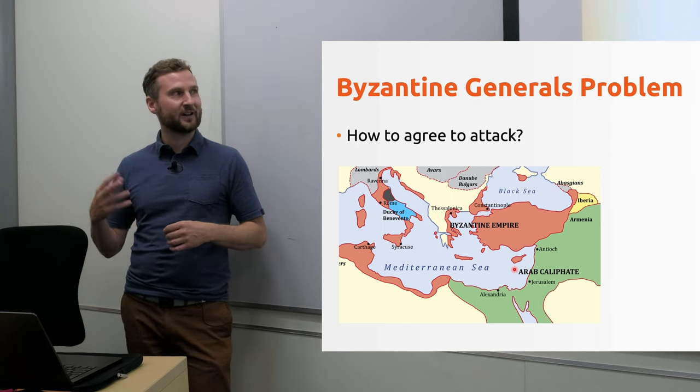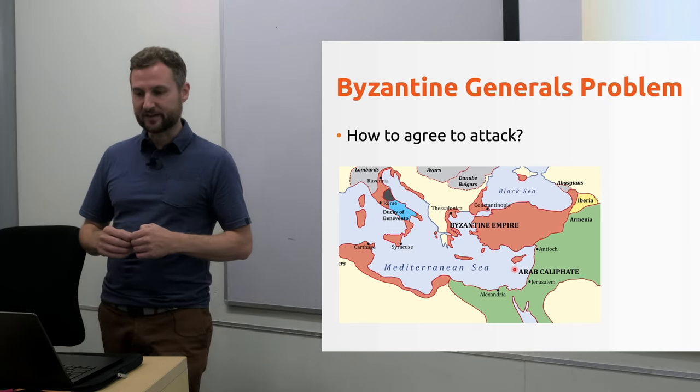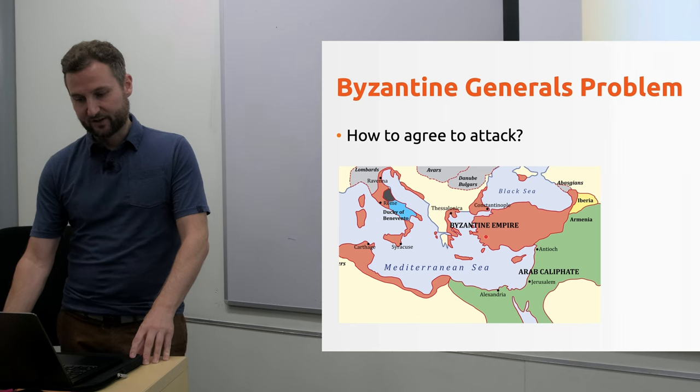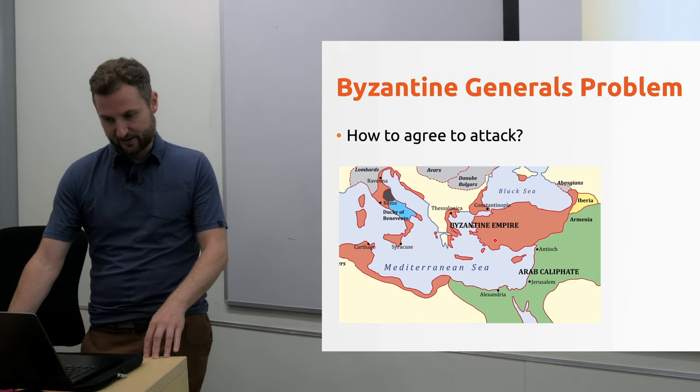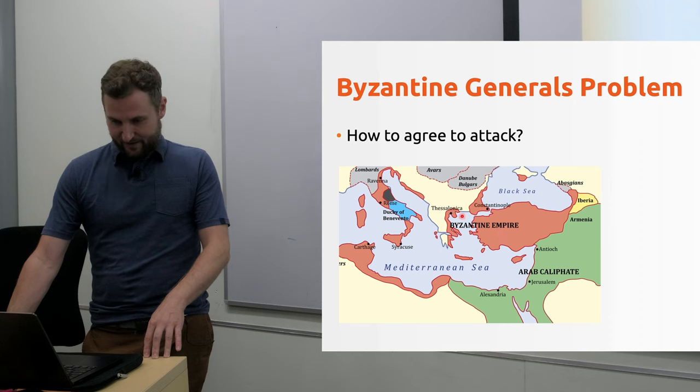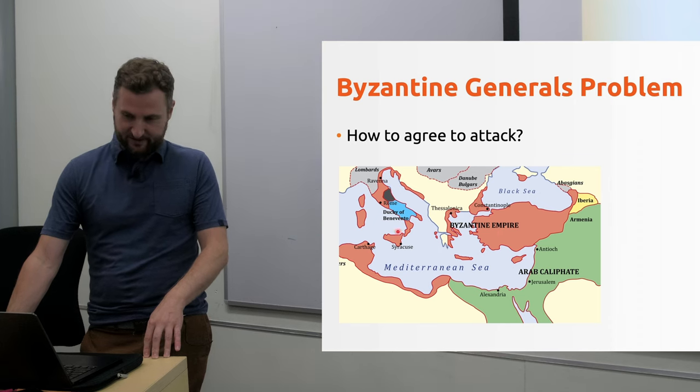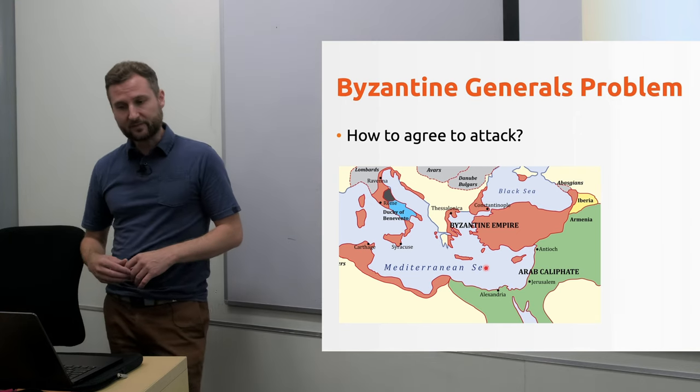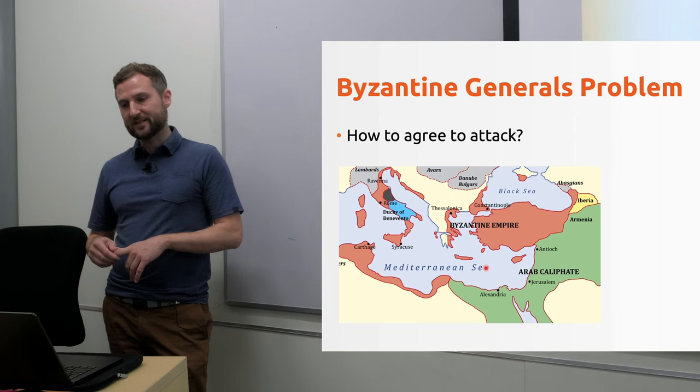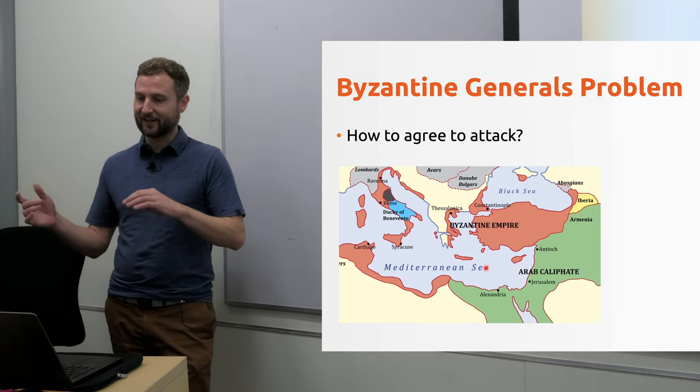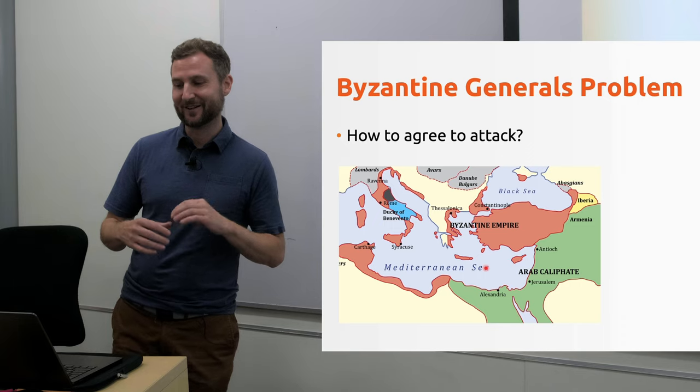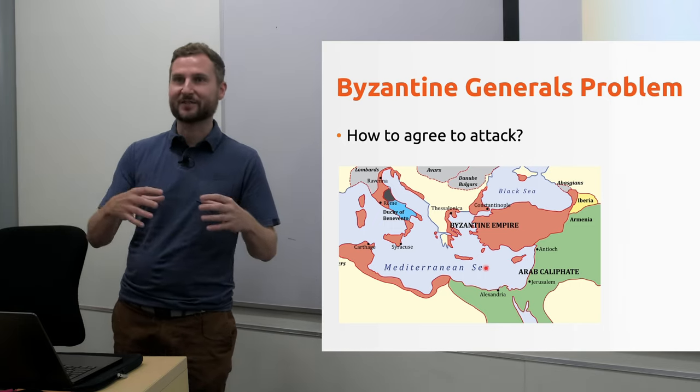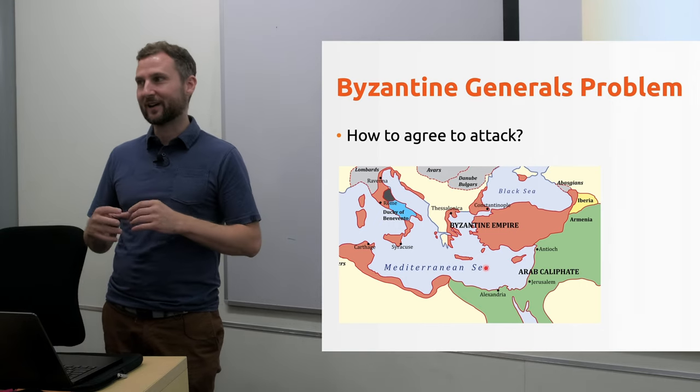This is called Byzantine fault tolerance and it's inspired here by the Byzantine generals problem. So here we have a picture of ancient Byzantine. Byzantine was all of Turkey, pretty much a bunch of Greece and Italy and North Africa. They had a good thing going for themselves here in the empire. The Byzantine generals problem, it really has nothing to do with the old empire, but it's formulated something like this.